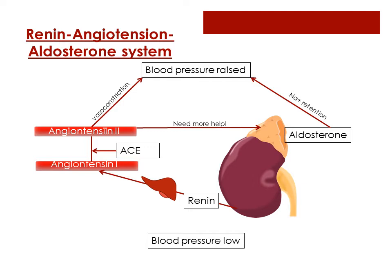The liver releases angiotensin 1. ACE, or angiotensin-converting enzyme, comes in and changes angiotensin 1 to angiotensin 2, which is the most powerful vasoconstrictor we have in our bodies. With vasoconstriction, blood pressure goes up. But angiotensin 2 — I'll call her Angie for short — she's not done yet. She calls her friend aldosterone, a hormone in the adrenal gland of the kidney. Aldosterone will save sodium, and water follows sodium.